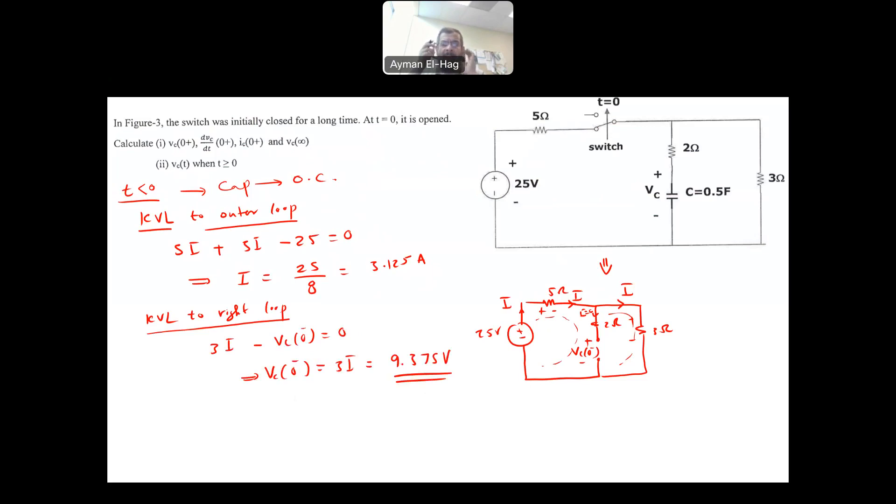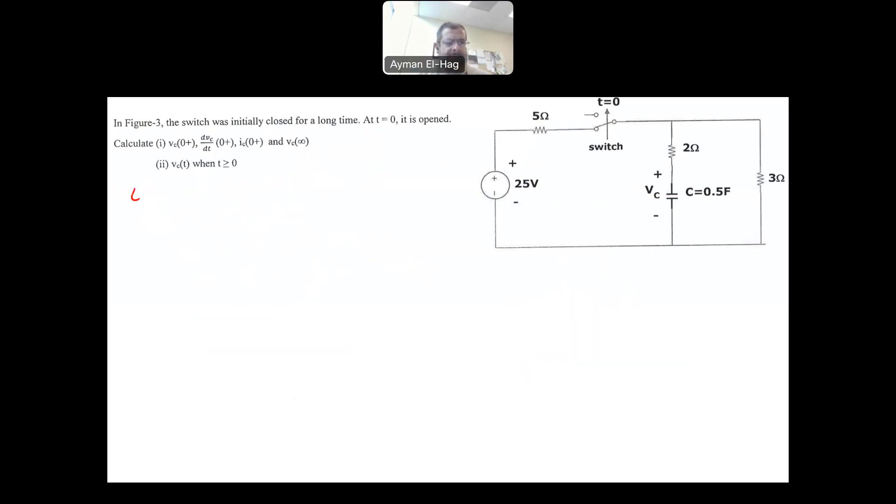Then now we need to analyze the circuit at T equal to zero. Now at T equal to zero, what will happen? The switch will be open. So this will be an open circuit here. So here is our 25 volt, 5 ohm, and then we'll have here an open circuit. Completely open circuit here. And then you will have here your 2 ohm. Now how to model the capacitor at T equal to zero. We assume that the voltage of the capacitor doesn't change instantaneously. So as a matter of fact, VC at zero plus is equal to VC at zero negative, which is equal to 9.375. And that is the first requirement.